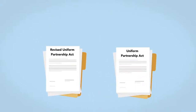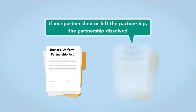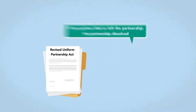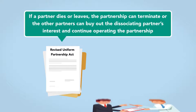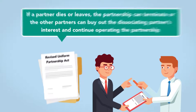Under the original UPA, if one partner died or left the partnership, the partnership dissolved. Under the Revised UPA, if a partner dies or leaves, the partnership can terminate, or the other partners can buy out the dissociating partner's interest and continue operating the partnership.